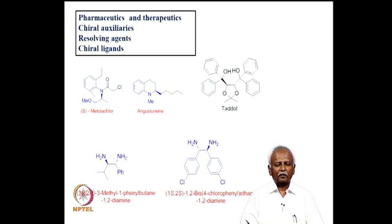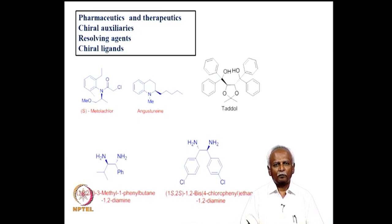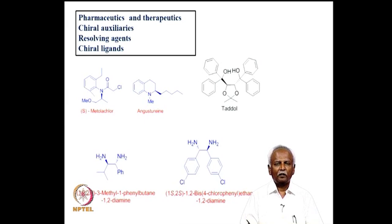Not only pharmaceuticals and therapeutics — you also need to have chiral molecules to make chiral ligands and chiral resolving agents. If you are not able to make a molecule in a chiral form, you need to be in a position to separate the two isomers so that the pure form of the drug can be used. It is important to have these chiral auxiliaries and resolving agents. This whole area of making chiral molecules turns out to be an extremely important one.